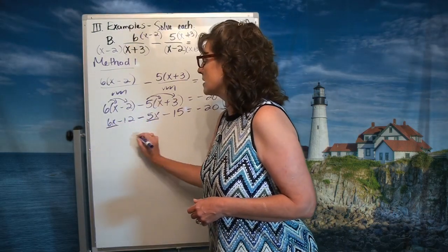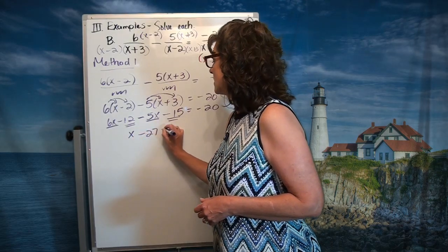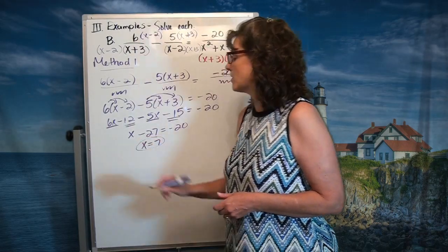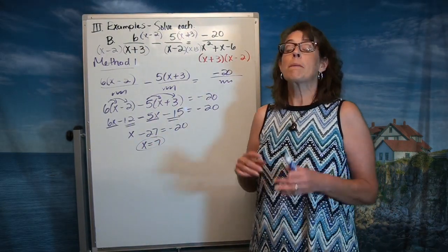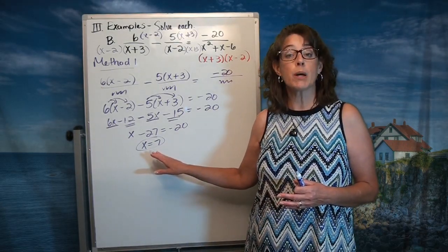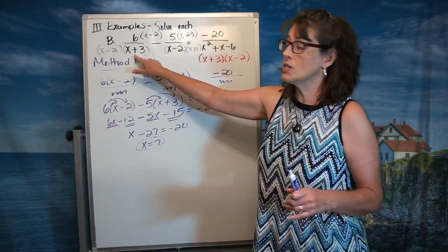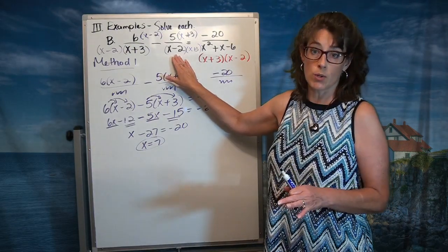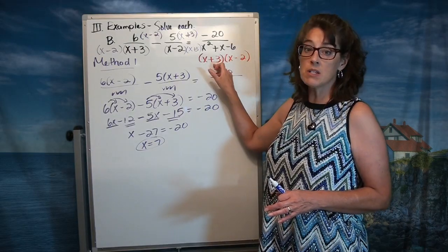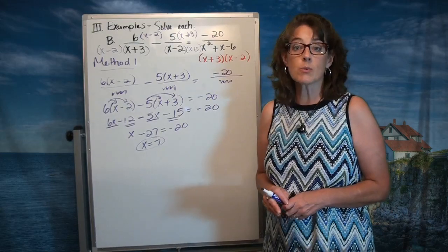Now we have an equation that's pretty easy to solve. Combine like terms: 6x minus 5x is x, and negative 12 minus 15 is negative 27. From here, we add 27 to both sides, giving us x equals 7. Now remember, you need to check: is this an extraneous root? Look at these denominators. If you plug 7 in for x plus 3, will it give a zero? No — it'll give you a 10. If you plug it in for x minus 2, will it give a zero? No — it'll give you a 5. So neither denominator is zero, and the x plus 3 times x minus 2 denominator won't be zero either. So x equals 7 is perfectly fine — not an extraneous root.